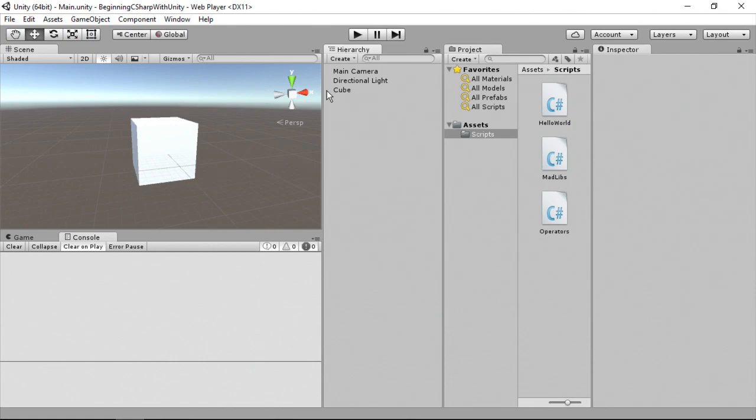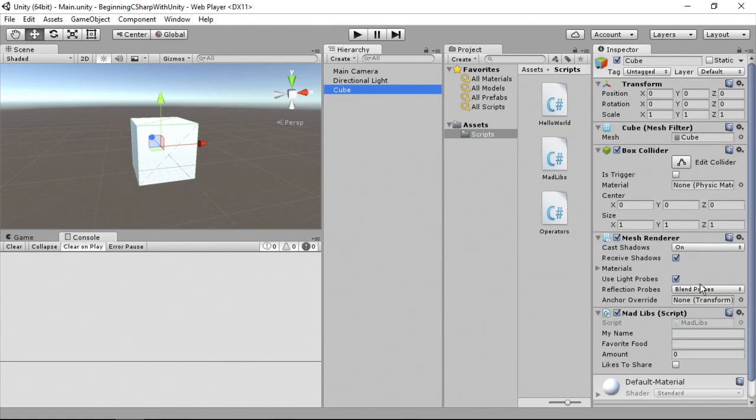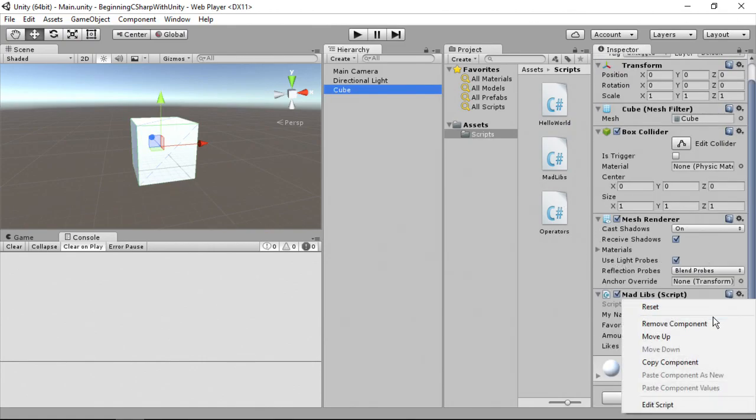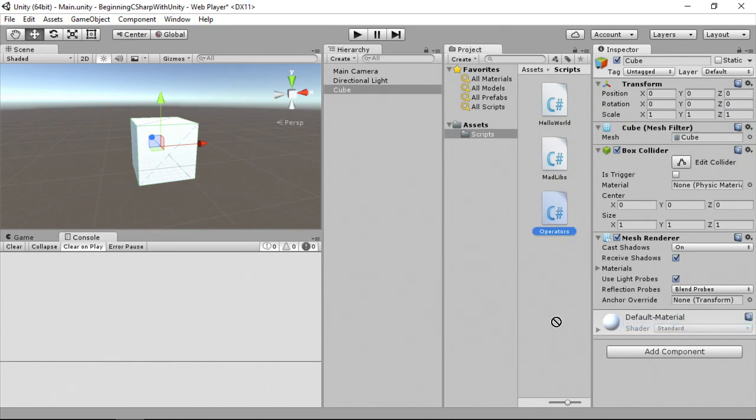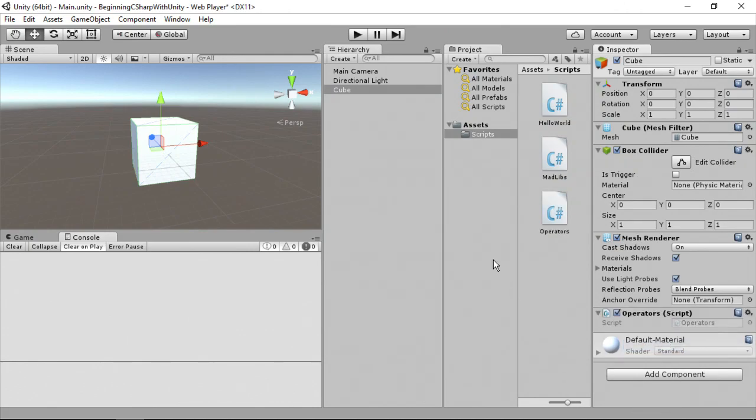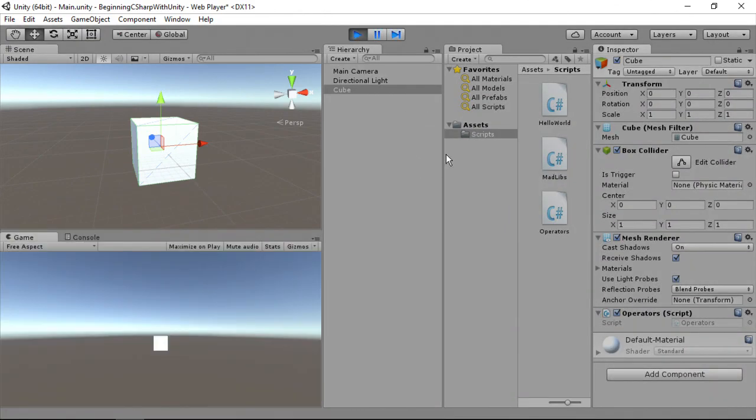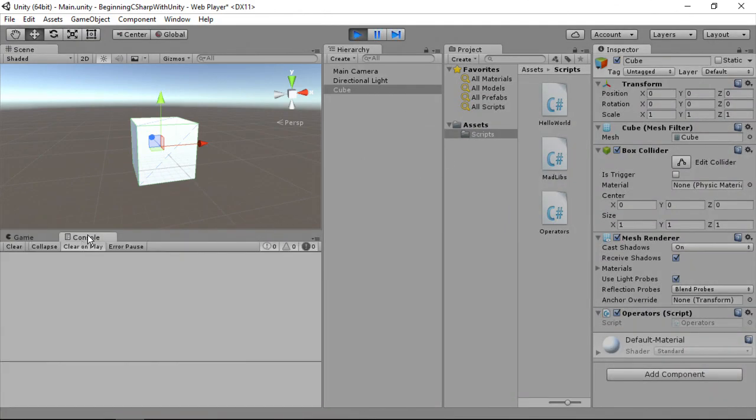So here we are back in Unity. I'm going to select my cube, and we're going to remove Madlibs from this. And we're going to add operators to this. Now I'm going to run this. We'll open up the console, select the cube, and then deselect it. And here you can see x is 506.